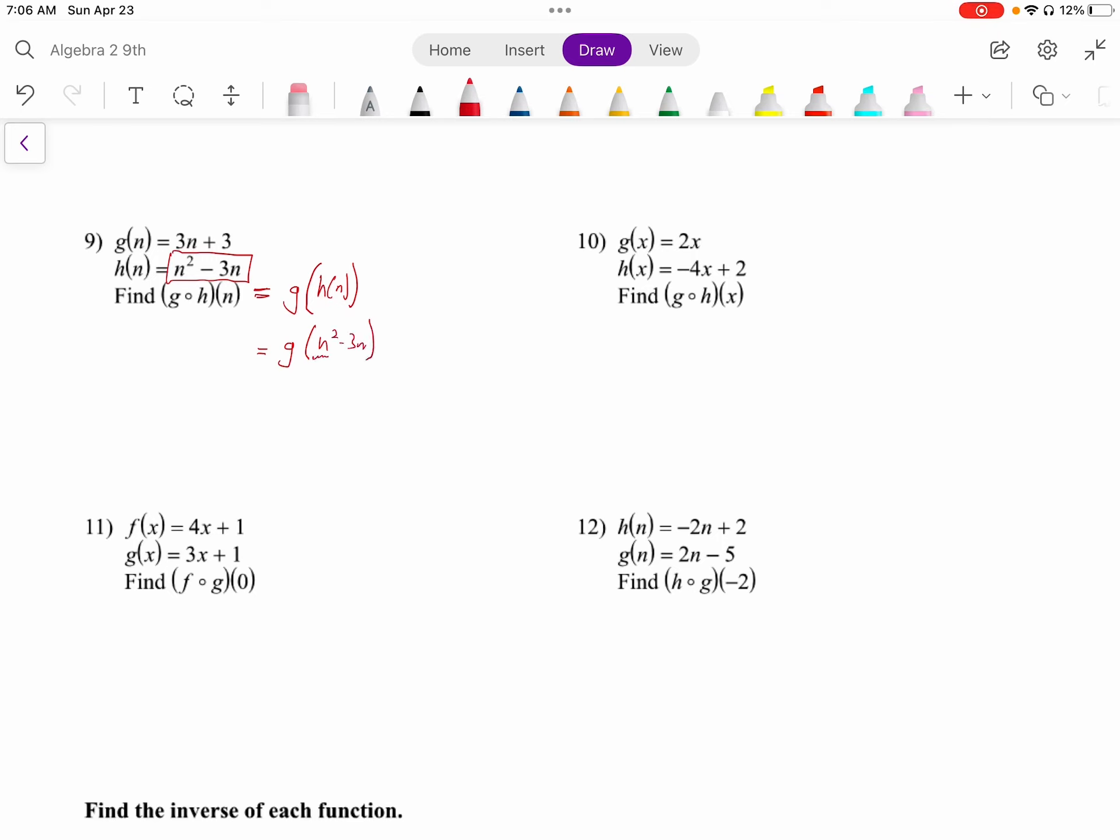And now what we're going to do is take this n squared minus 3n and put it in for n into the g function. So we replace that n with the n squared minus 3n. So this is going to be 3 from our g function times n, but we're replacing n with the n squared minus 3n plus 3. And now we take a couple steps to simplify that. Actually I only took one step because there's no like terms to add after that.